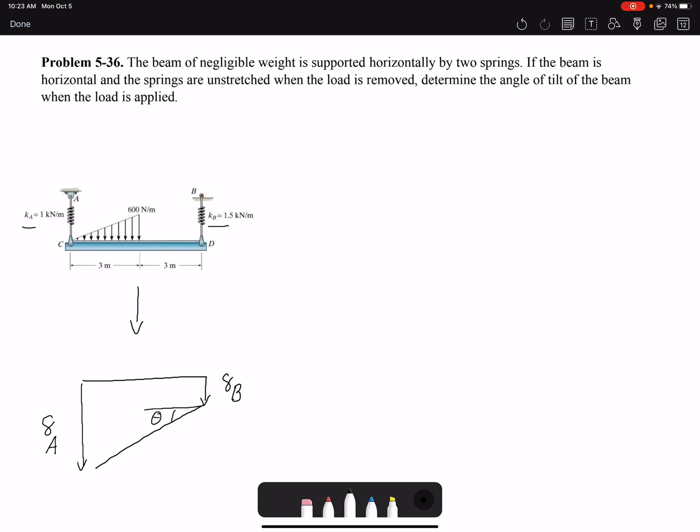The question is asking for this theta. If we have the displacement or deflection at the two points we can find the angle. Our first task is to find delta_b and delta_a, but to find them we need to find the forces being applied to our springs. To find the forces we need equilibrium equations. The first step in equilibrium equations is to draw the free body diagram.